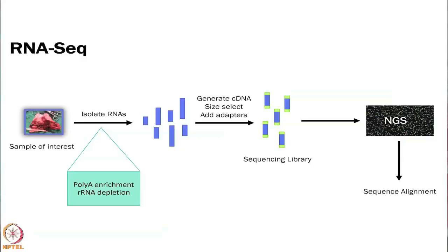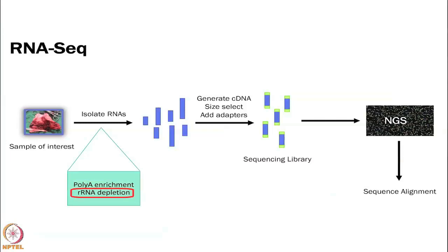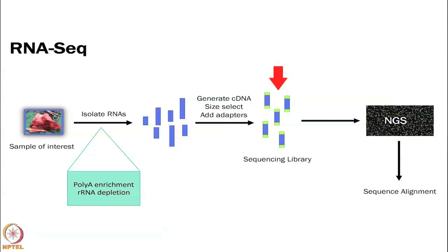In RNA-seq you have to enrich your RNAs. You isolate your RNAs by either using poly-A enrichment, pulling them out of your sample, or you can deplete ribosomal RNA — those are the two different methods. You get this enrichment of mRNAs, then select for specific sizes, add adapters similar to what was shown with genomic sequencing, and then do the next-gen sequencing. This is done using Illumina or similar instruments.